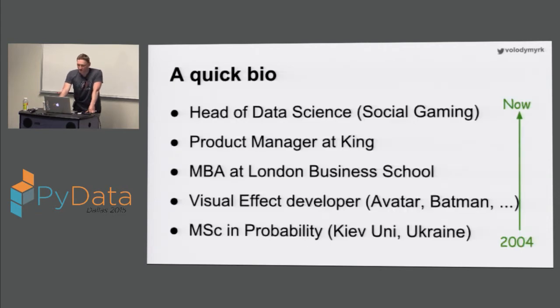So about myself, really quickly. I'm from Ukraine, from Kyiv. I have a degree in probability theory from Kyiv University. I've done a lot of visual effects working in big blockbuster movies. Then I did an MBA. I was a product manager at King, the guys behind Candy Crush Saga. And now I'm heading data science at Product Madness.